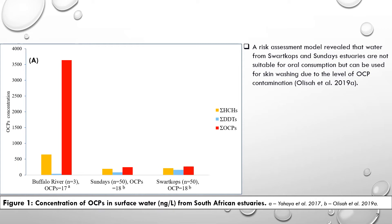This slide shows the concentration of OCPs in surface water from South African estuaries. Assessment has only been conducted in three estuaries in South Africa: the Buffalo River Estuary, Swartkops, and Sundays Estuary. For Buffalo River, three samples were taken across two seasons, and 17 OCPs were analyzed. For Sundays and Swartkops, 50 samples were taken across four seasons, and 18 OCPs were analyzed. Levels reported for Buffalo were higher than those reported for Swartkops and Sundays. However, a risk assessment model revealed that water from Swartkops and Sundays is not suitable for oral consumption, but can be used for skin washing due to the level of OCP contamination.